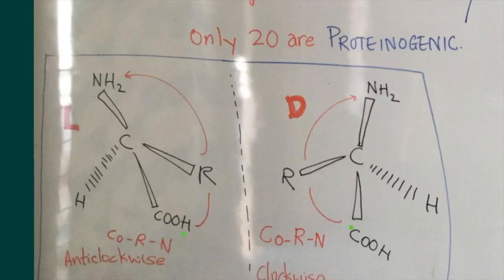The Cahn-Ingold-Prelog system, looked at in an earlier lesson, designates the two forms of the isomers as R and S. But here in the biochemistry option for IB chemistry, we follow what is typically used by most biochemists, which is the D designation or the L designation.